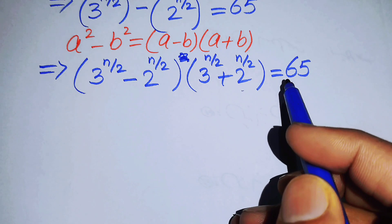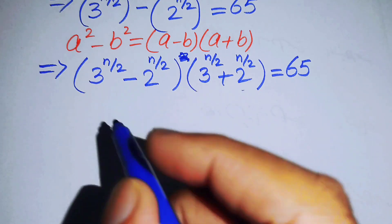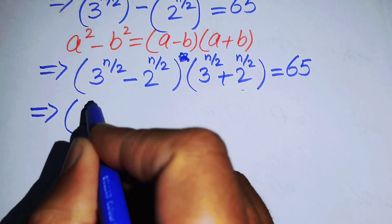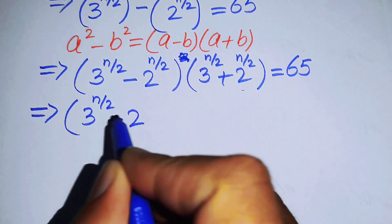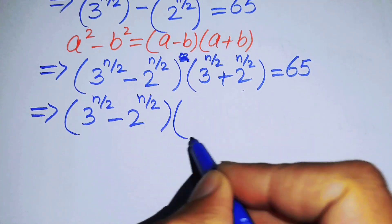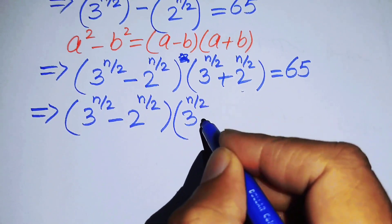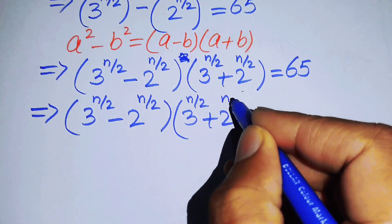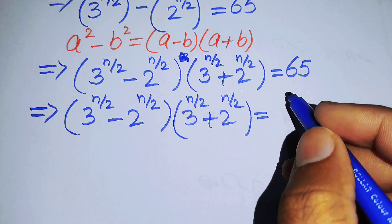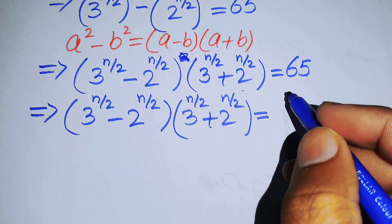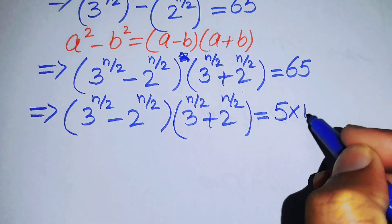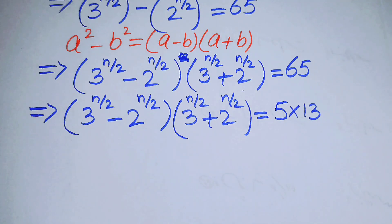We can make two factors on the right-hand side and then compare both sides. The left-hand side remains: (3^(n/2) minus 2^(n/2)) times (3^(n/2) plus 2^(n/2)) equals 65. We write 65 as 5 times 13.